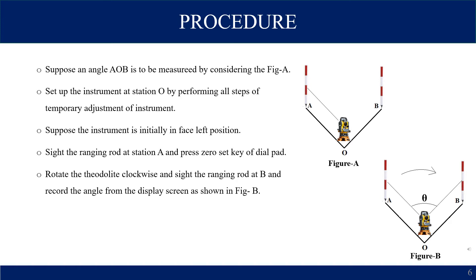The initial position will be the face left position, where the vertical circle will be on the left side of the observer. Then sight the ranging rod at A position, then you have to set the dial to zero.